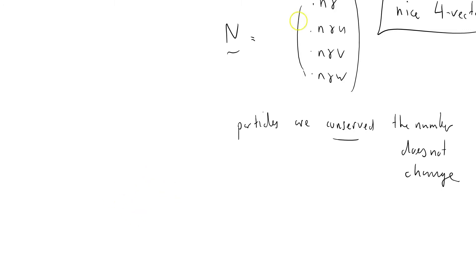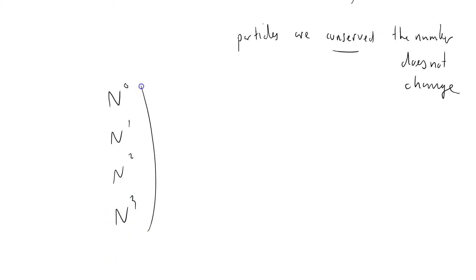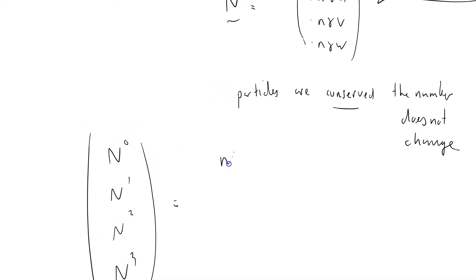This number flux vector is N0, N1, N2, and N3. And those components themselves are N gamma, N gamma U, N gamma V, and N gamma W.